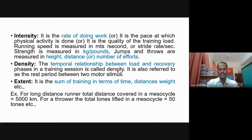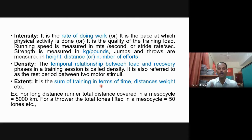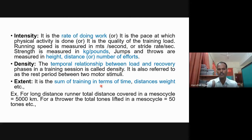The third point is extent. Extent is the sum of training in terms of time, distance, weight, etc. It means how you calculate or total the training — through timing, distance, or weight, whatever it may be. The total sum of training is called extent. If you understand these three concepts — intensity, density, and extent — you can fix the training load properly; otherwise, you cannot.